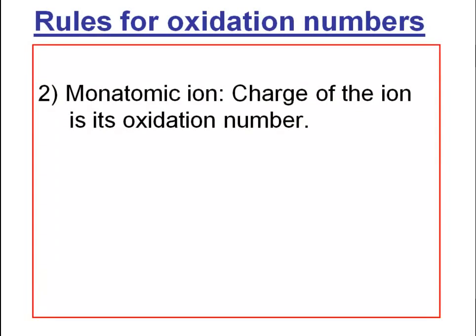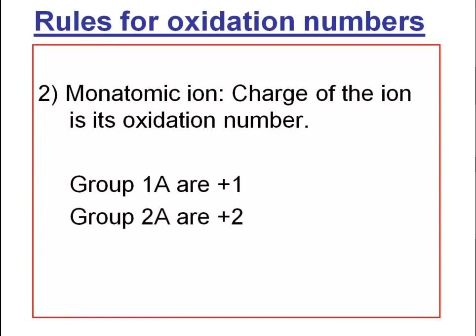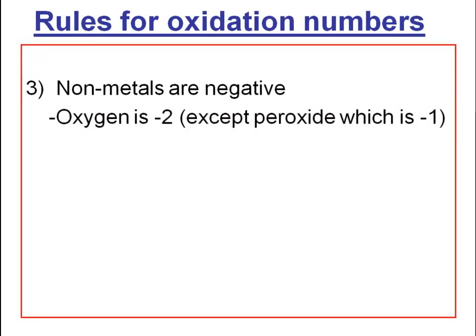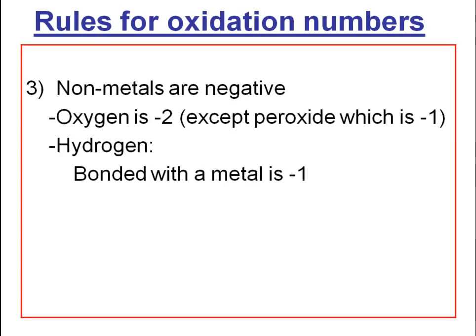The second rule is that monatomic ions have the charge of the ion as their oxidation number. Group 1A, the alkali metals, have a +1 charge, so their oxidation number is +1. Group 2A has +2. Aluminum is +3. Non-metals will be negative. Oxygen is −2, except when present as a peroxide, then it's −1. Hydrogen is different: if bonded to a metal it's −1, but if bonded to a non-metal it's +1.